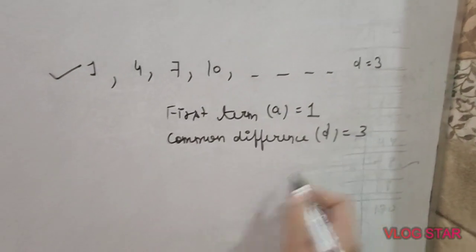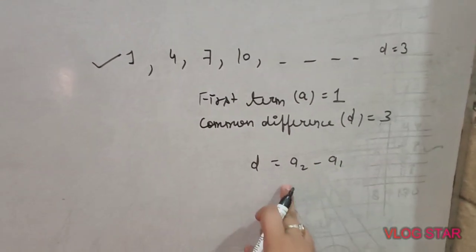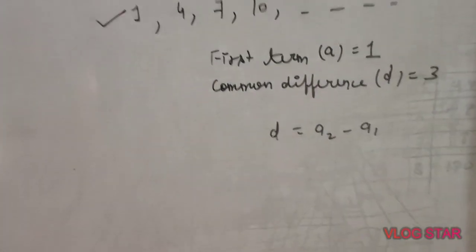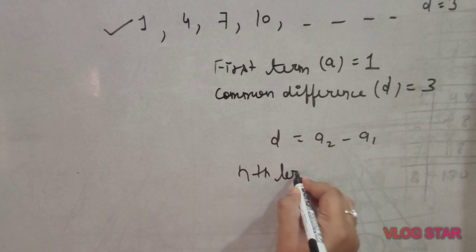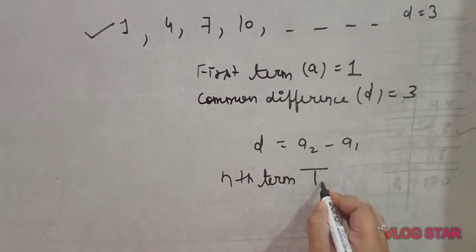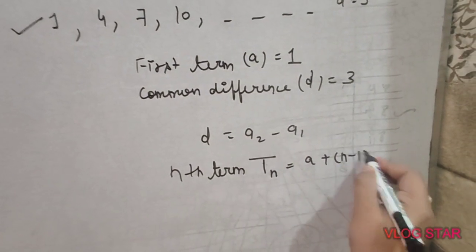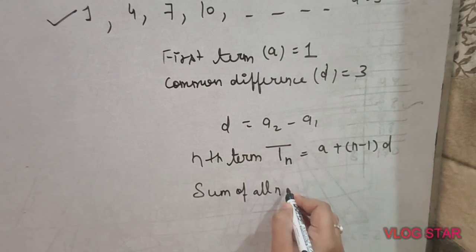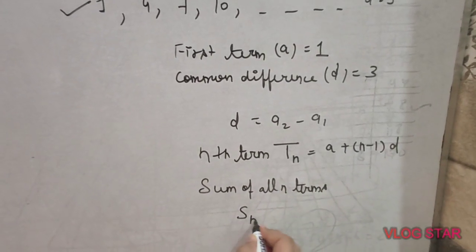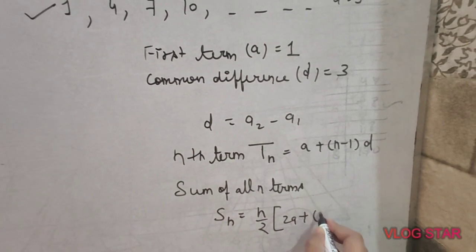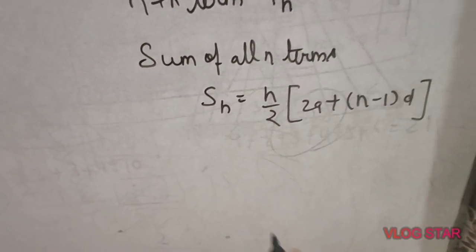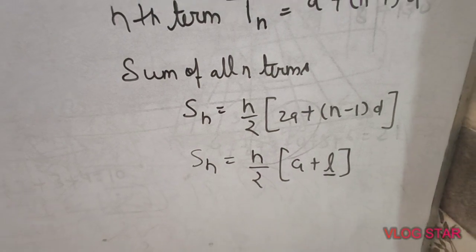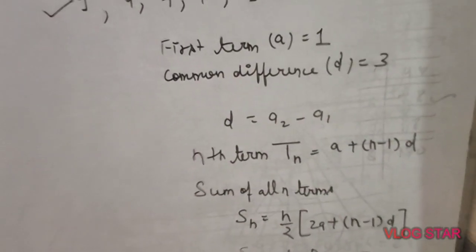To find the common difference, the formula is A2 minus A1 — consecutive term minus the previous term. To find the nth term, the formula is Tn = a + (n−1)d. To find the sum of n terms, Sn = n/2 × [2a + (n−1)d]. There is also another formula for sum of n terms: Sn = n/2 × (a + l), where l is the last term of the series.